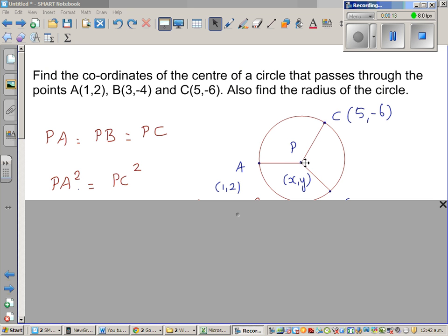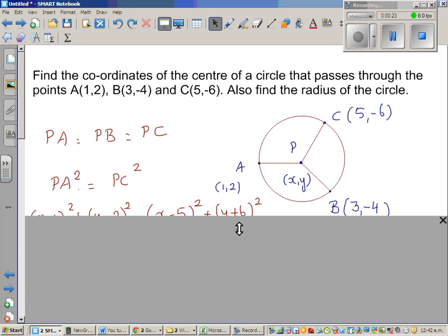This is a circle with center P, and we want to find the coordinates of the center P, which is (x,y). A, B, and C are the three points. They have been drawn arbitrarily: A(1,2), B(3,-4), and C(5,-6).